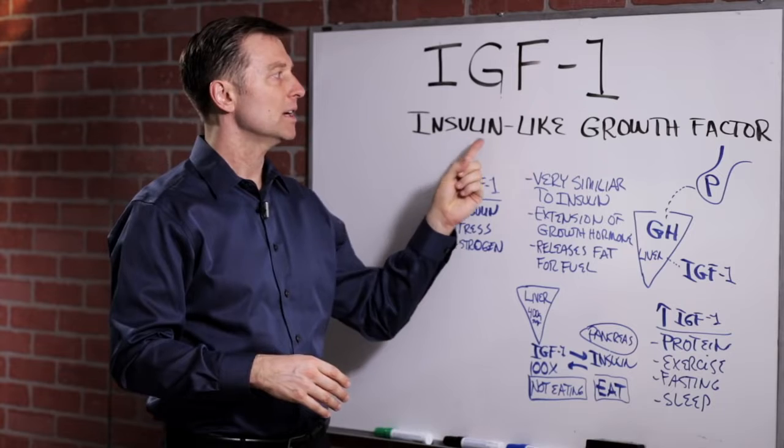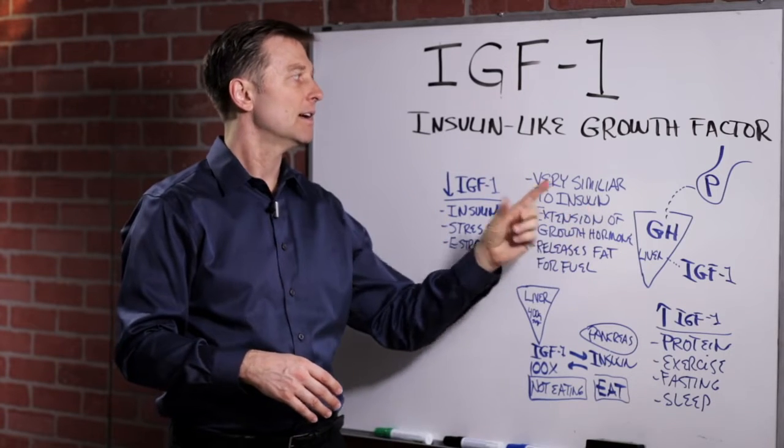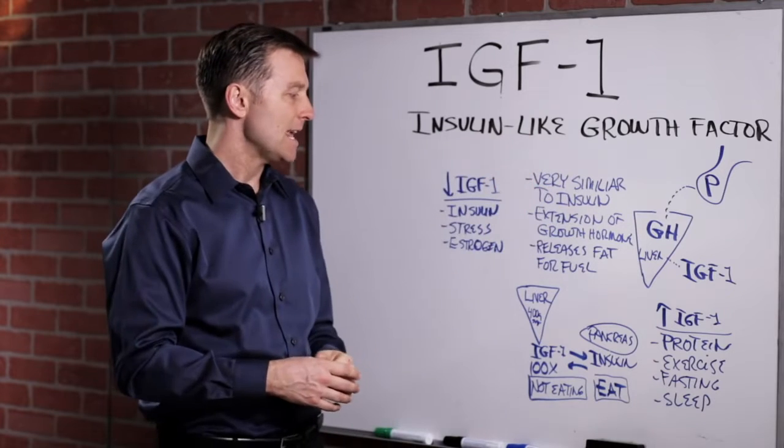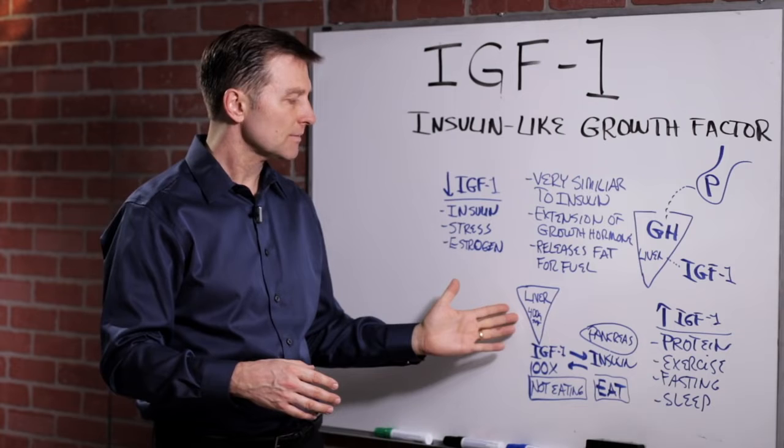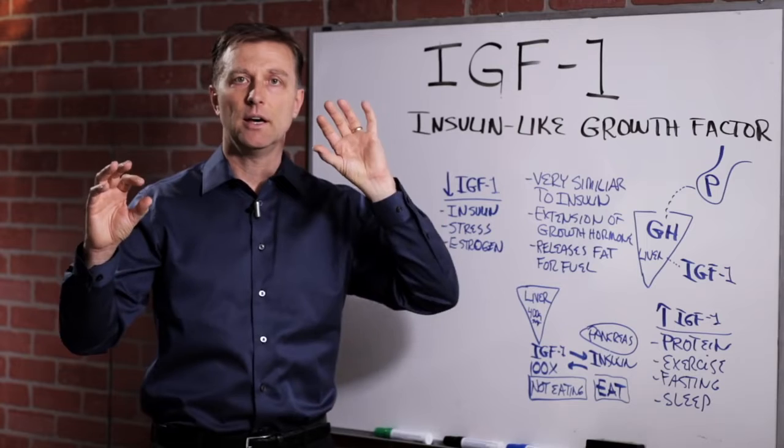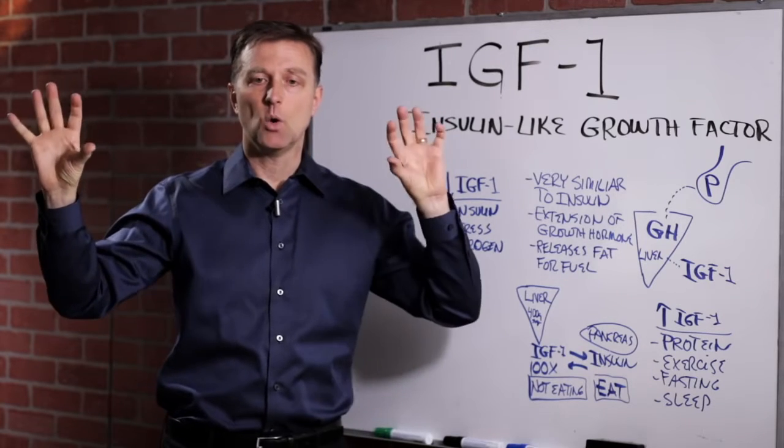The chemistry of growth hormone is very similar to insulin. That's the name insulin-like growth factor. And what happens in the liver, IGF is made, and then you have the pancreas makes insulin. So you have the pancreas that makes insulin and the liver that makes IGF.